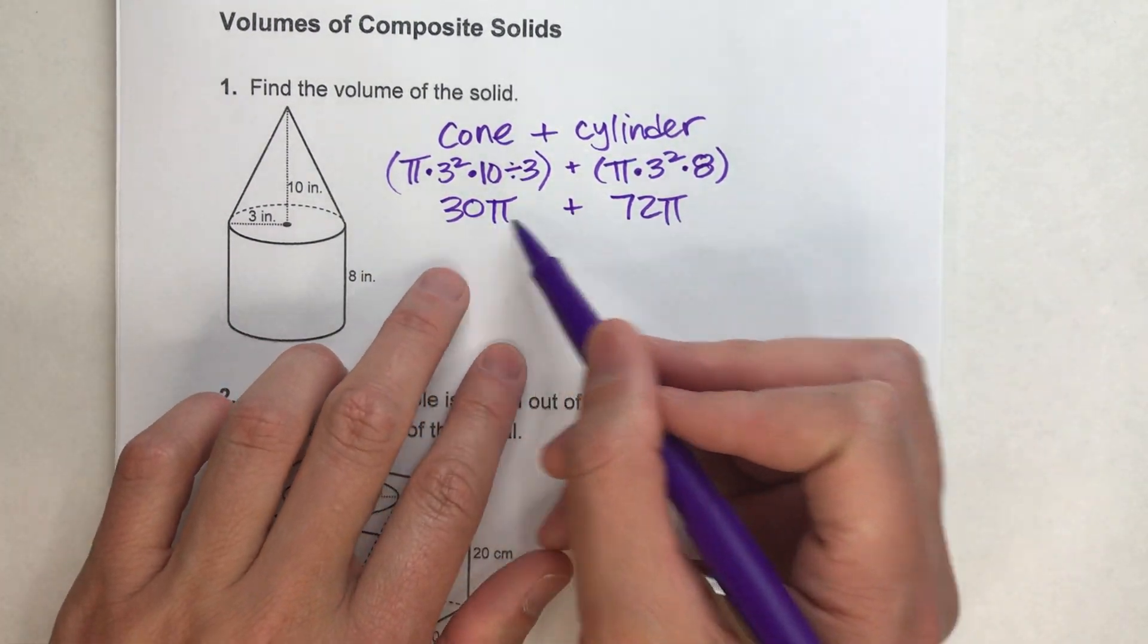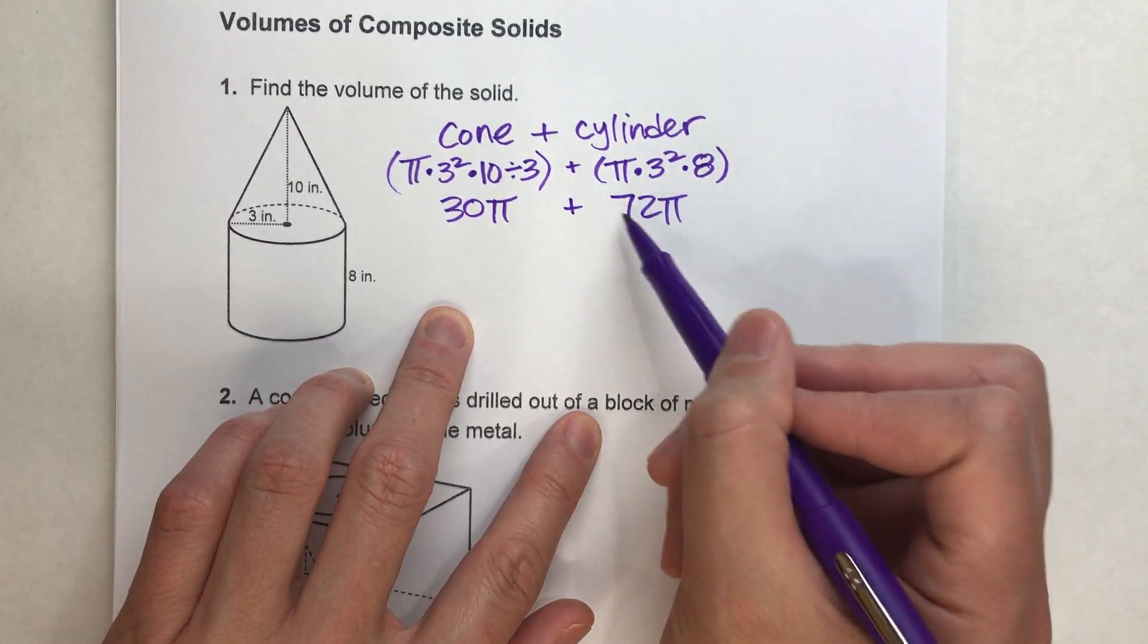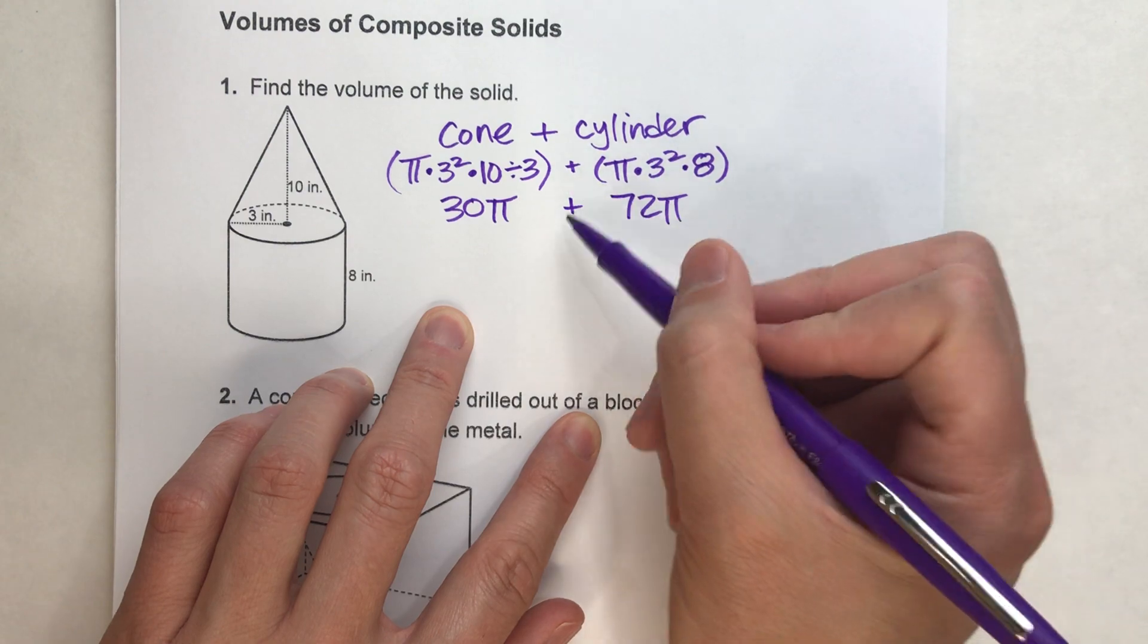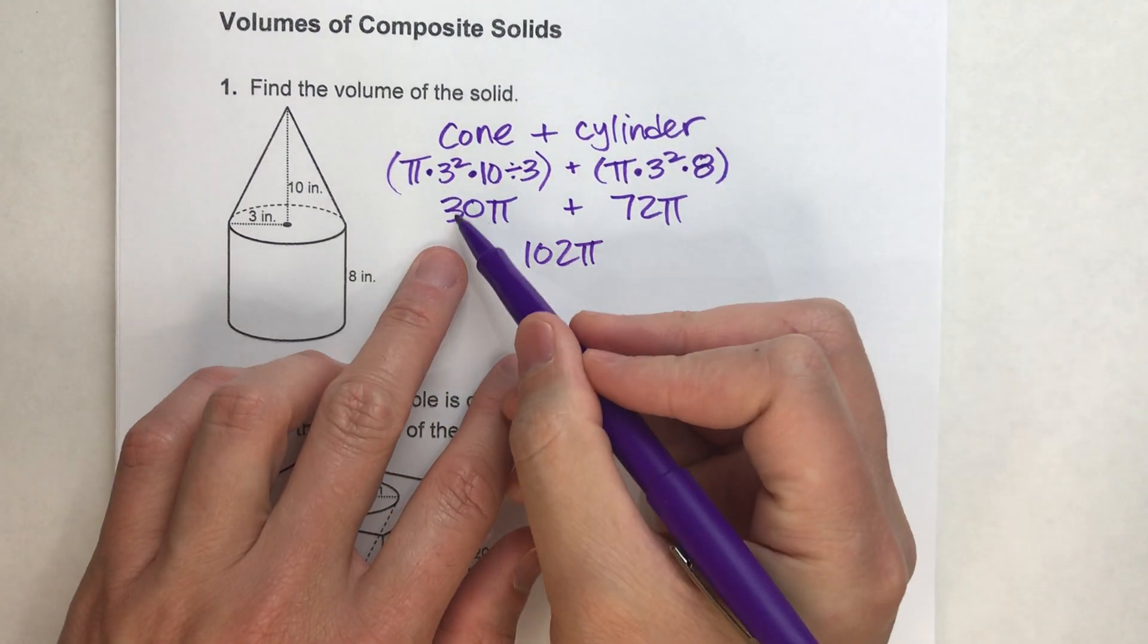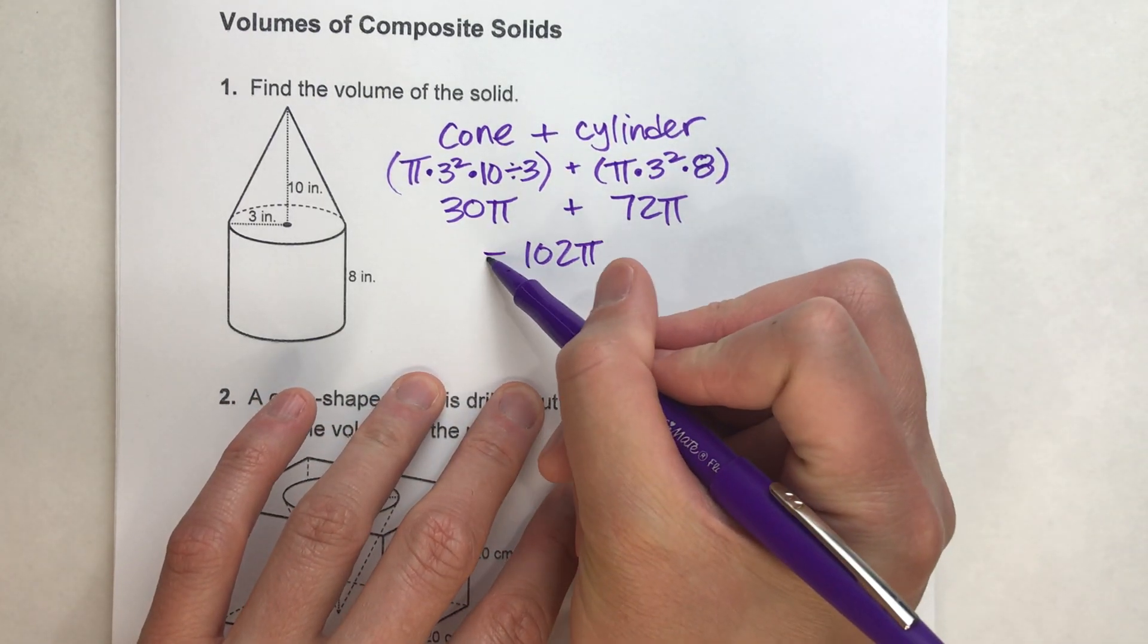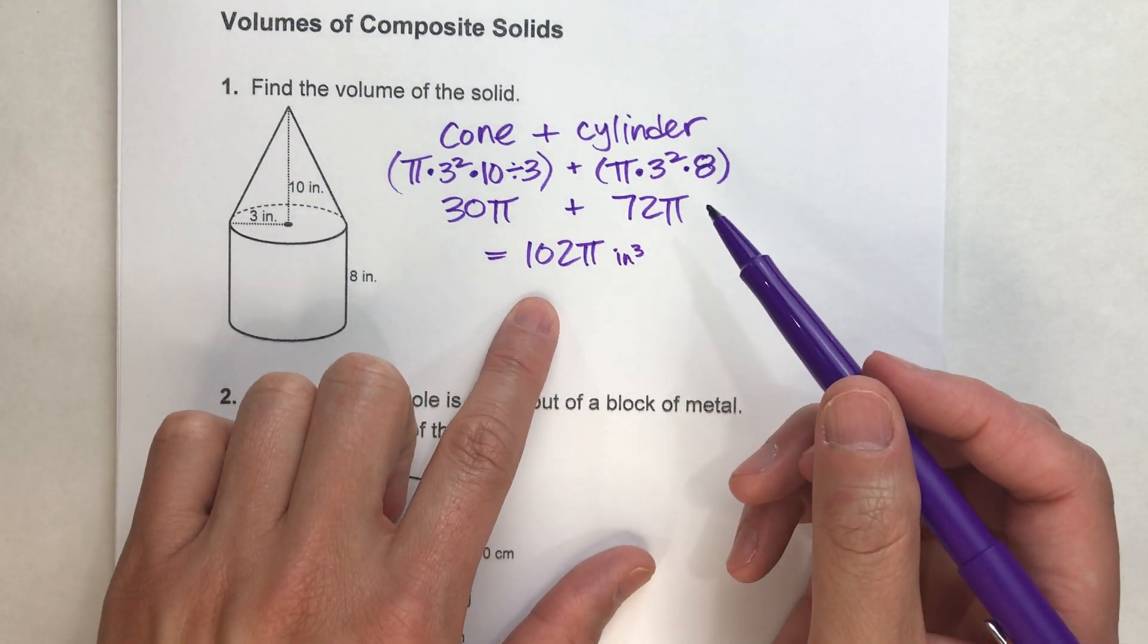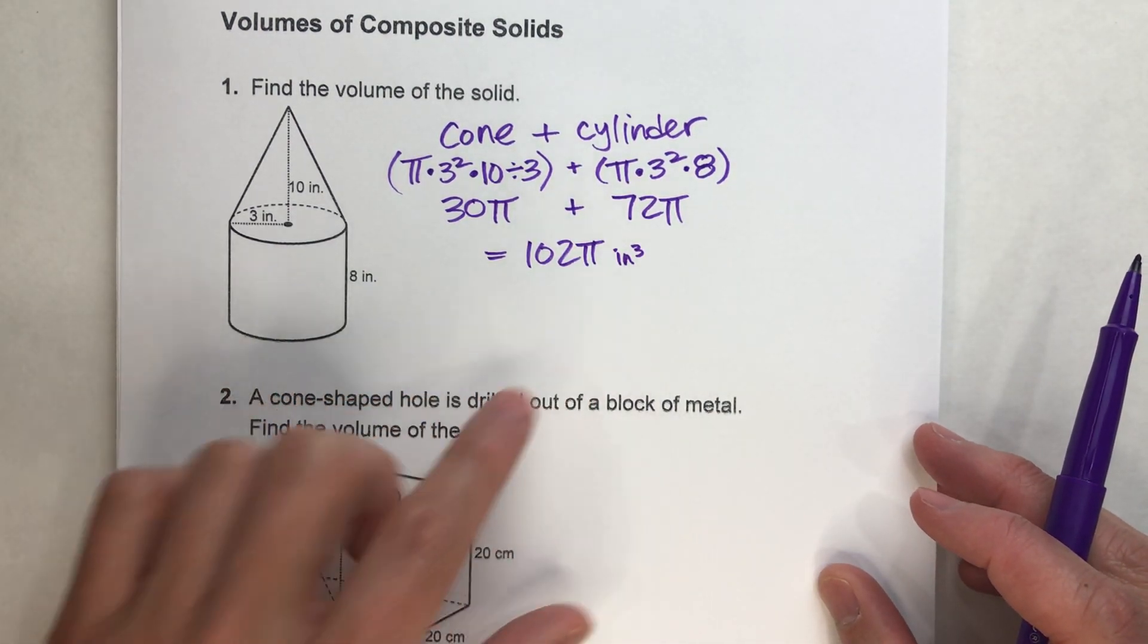And we can simplify this even more, because if you have 30 pi over here and you're adding 72 pi over here, that comes out to a total of 102 pi, because 30 pi's plus 72 pi's is 102 pi's. And technically, this is your exact answer. If you wanted the exact answer in terms of pi, that would be it.